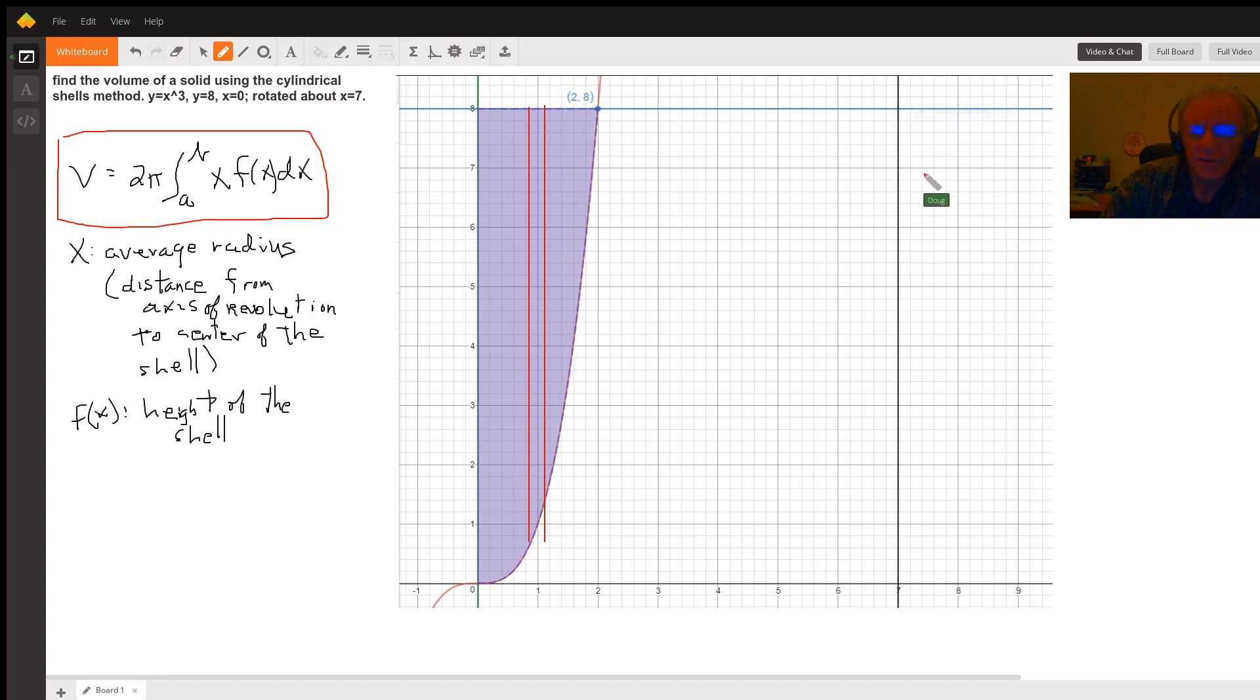an axis of revolution. In our case, for this problem, the line X equals 7 is the axis of revolution, and this purple region is the area between the curve Y equals X squared, X cubed rather, and the line Y equals 8 and X equals 0. So,